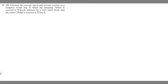In this problem, we're told to calculate the average speed and average velocity of a complete round trip in which the outgoing 250 kilometers is covered at 95 kilometers per hour, followed by a one-hour lunch break, and the return 250 kilometers is covered at 55 kilometers per hour.